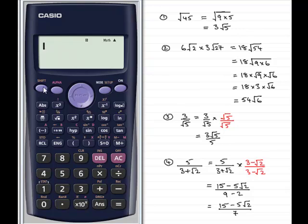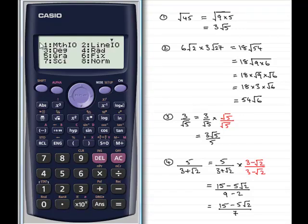First of all though, make sure that you're in the right mode. So by selecting Shift Mode, make sure you're in the mode 1 here, Maths.io. So put that in mode 1.